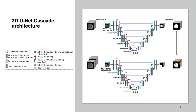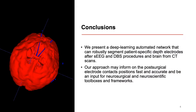We used an adapted version of the 3D Cascaded NN-UNet network on our in-house dataset, which was comprised of 90 post-surgical subjects. We present a deep learning automated network that can robustly segment patient-specific depth electrodes after SEEG and DBS procedures, and brain from CT scans. Our approach may inform on the post-surgical electrode context and be part of neurosurgical and neuroscientific toolboxes and frameworks.